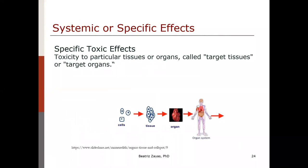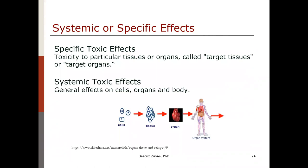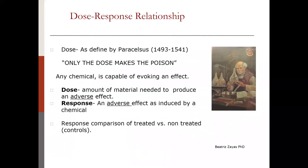There are different types of toxic effects. I'll classify them in two groups: specific toxic effects, which are directed to target tissue — toxicity to a particular tissue or organ, called target tissues or target organs — and systemic toxic effects, which are a more general effect. As an organism, we are composed of organ systems, organs, tissues, and cells. When talking about systemic toxicity, you could identify toxicity at all of those levels.